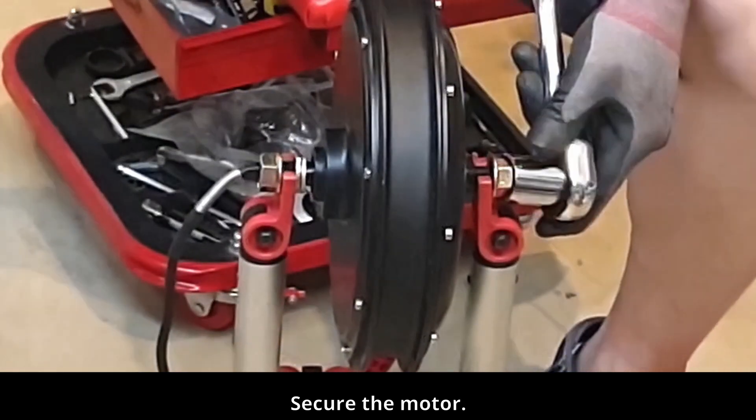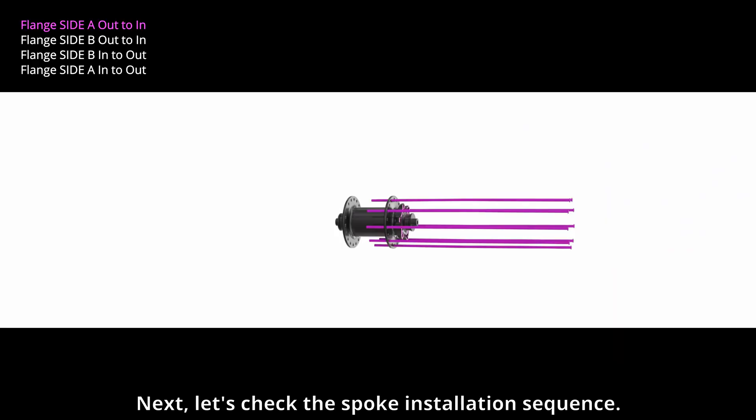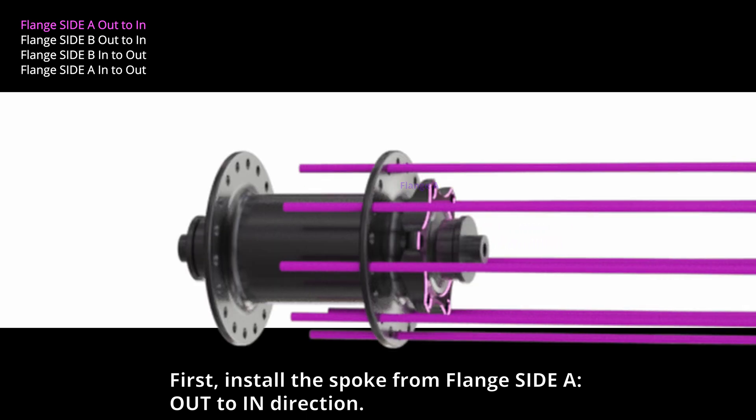Secure the motor. Next, let's check the spoke installation sequence. First, install the spoke from flange side A out to in direction.